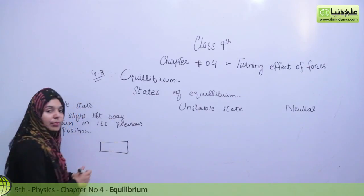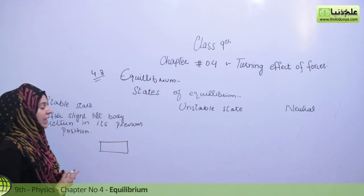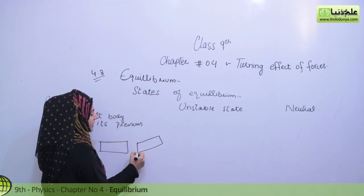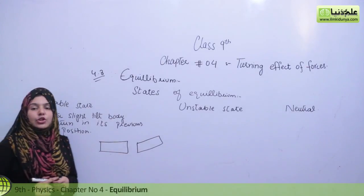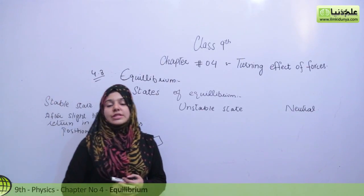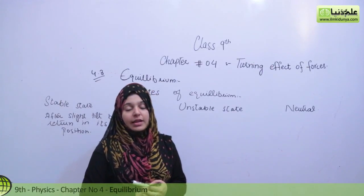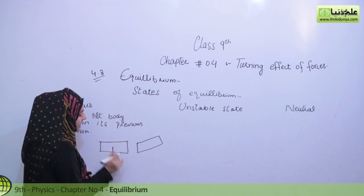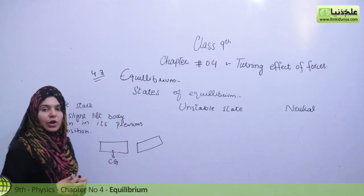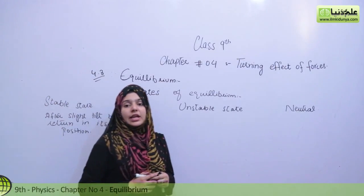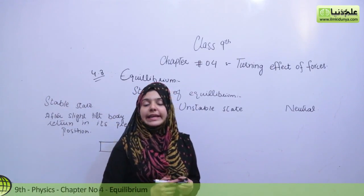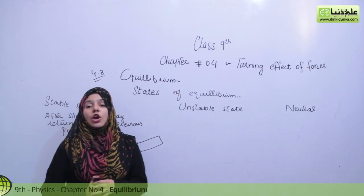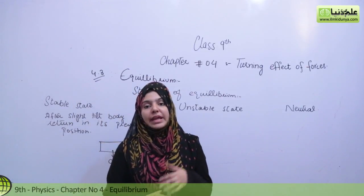For example, if we have a book lying on a table, it is in equilibrium. If we talk about equilibrium and its states, then the center of gravity is very important. The center of gravity determines whether the body is in equilibrium or not.